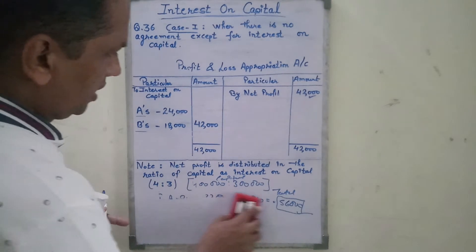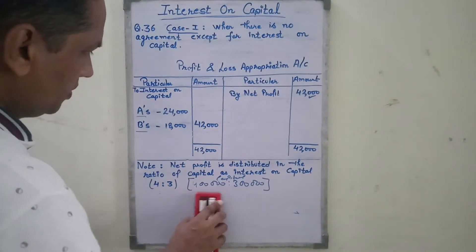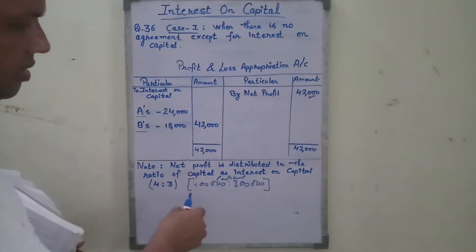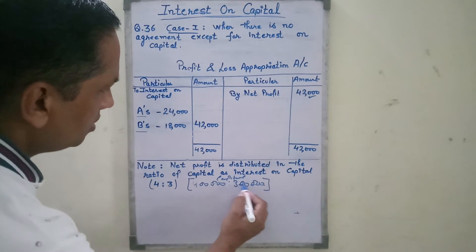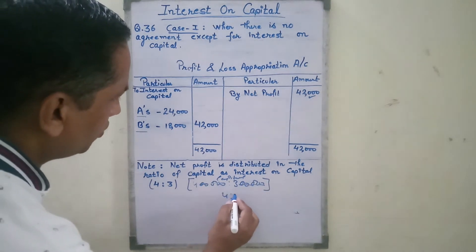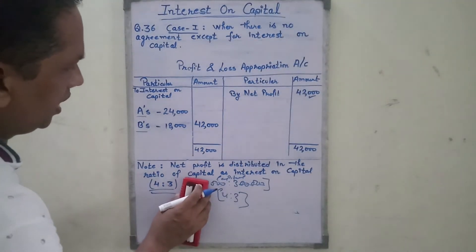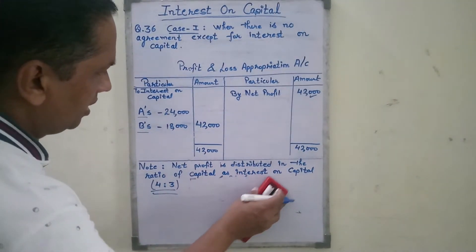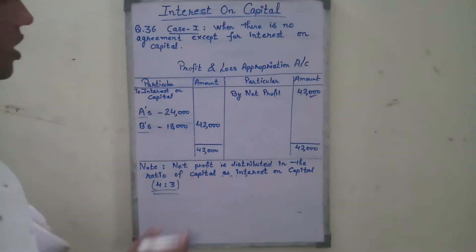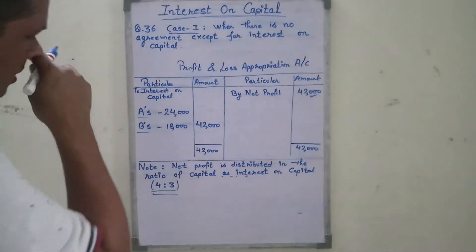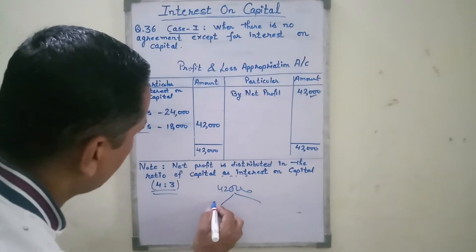So what is the capital ratio and how do we calculate it? The capital is 4 lakh to 3 lakh, so the ratio is 4:3. This means 42,000 is distributed as interest on capital in the ratio 4:3.